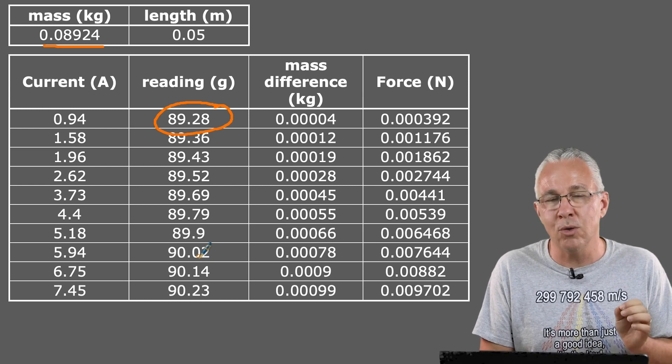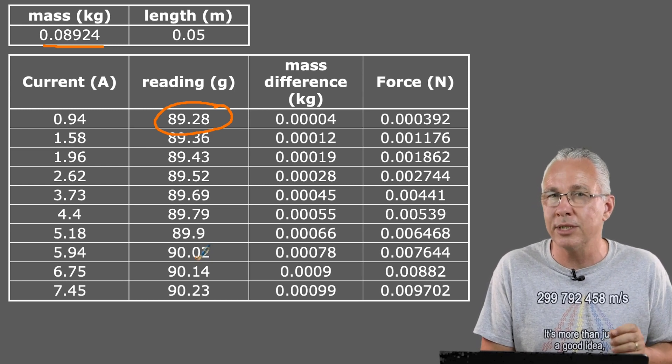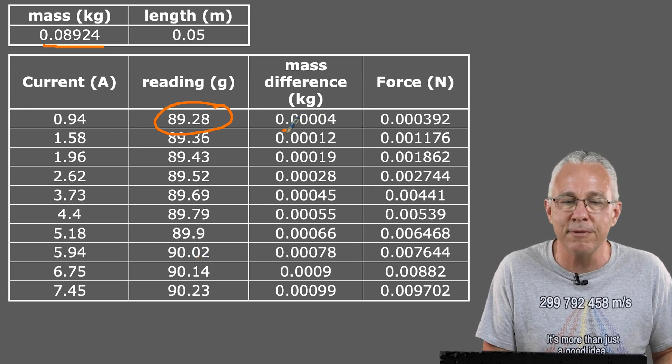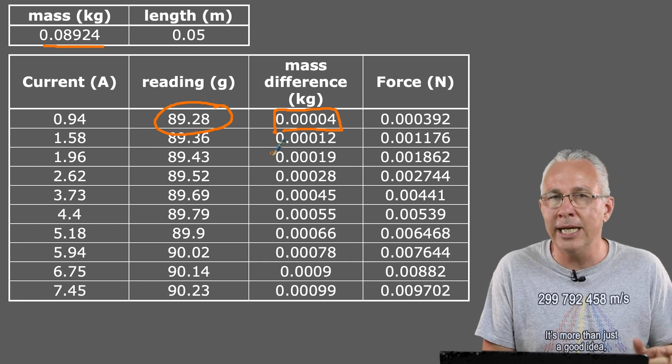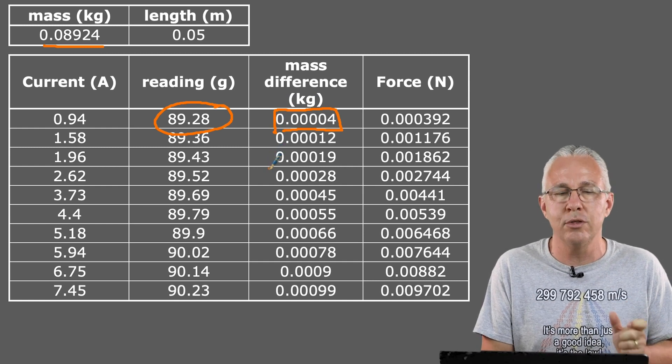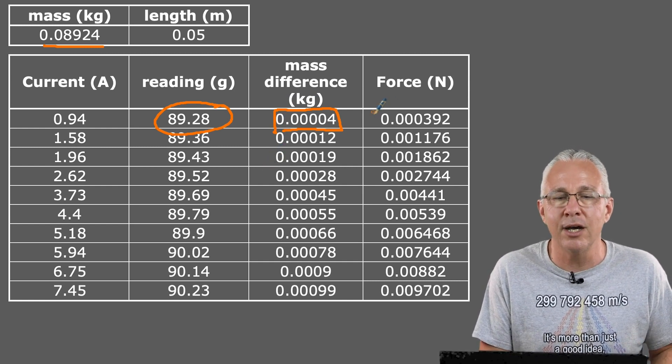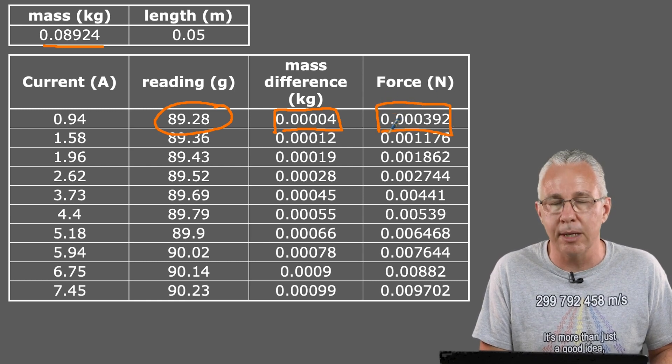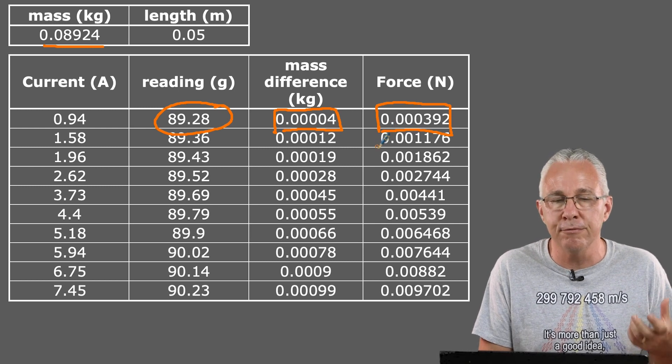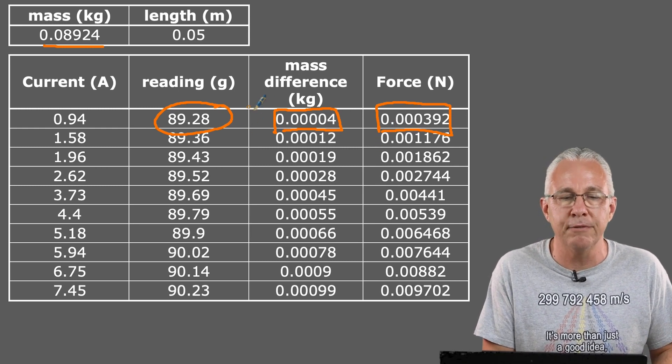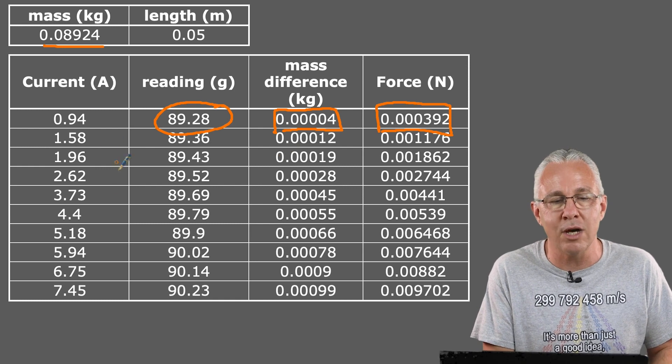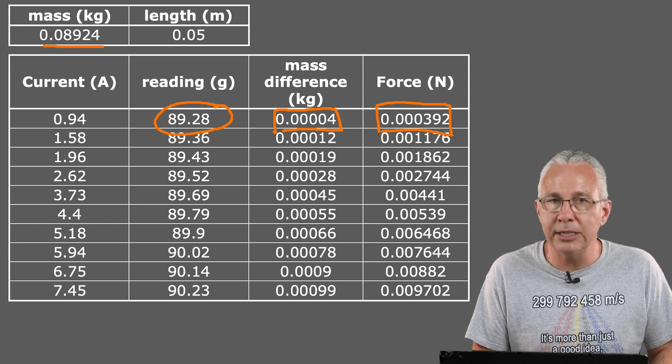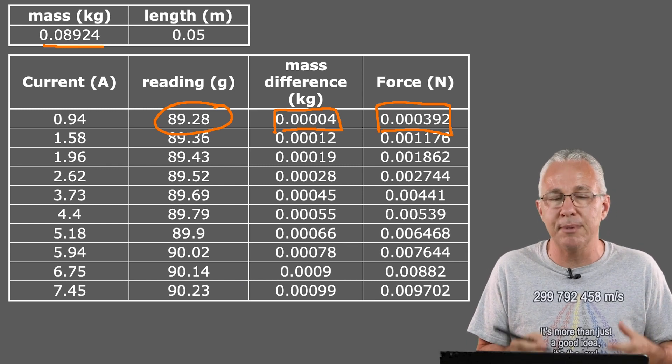But I need to also convert that into kilograms, which is the proper MKS or SI unit. So this is the value right here of the reading of the scale that is solely due to the magnetic field. So then what I need to do is I need to multiply that by 9.8, which gives me my reading of the force due to the magnetic field. So that is in essence what I've got, and I've done that for every particular reading there.